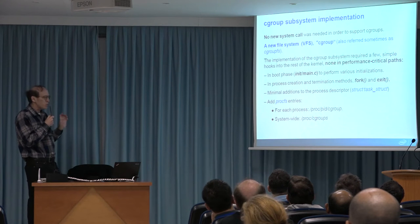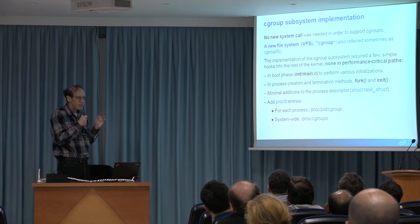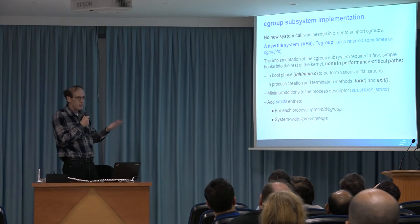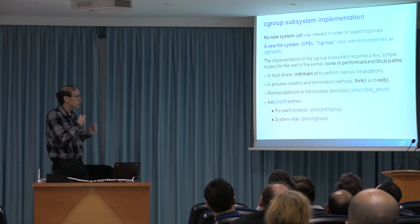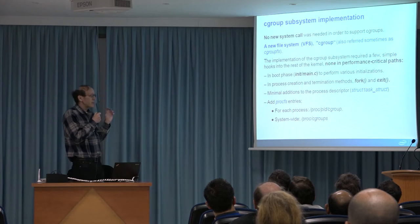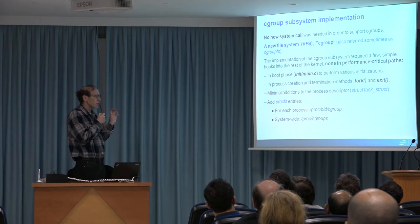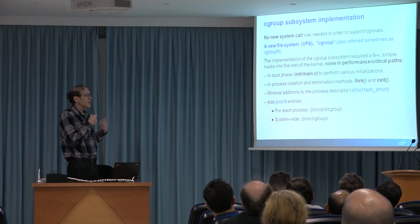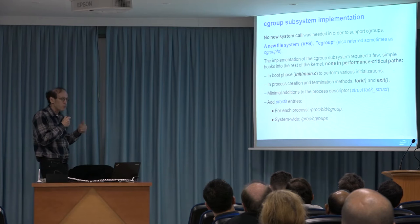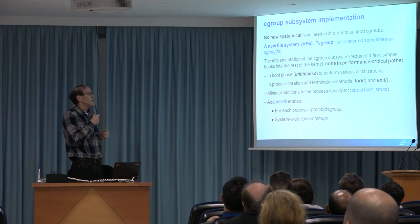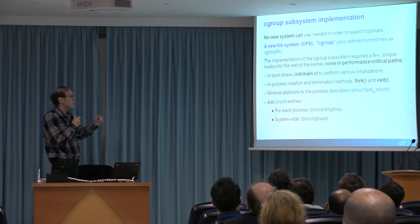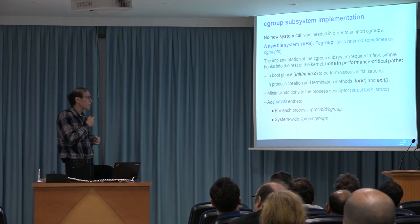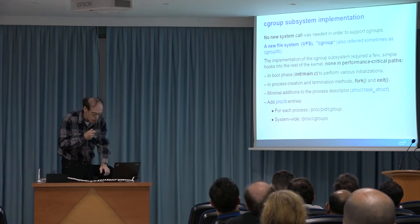Regarding implementation: the Cgroup subsystem is a file-based subsystem — every operation is a file system operation like mkdir, mount, mount option, remount, and so on. Implementation required very slight changes in the kernel itself — initialization in fork and exit callbacks. There were minimal additions for the process descriptor, additions of procfs entries per process and per system, and also additions for the socket structure.